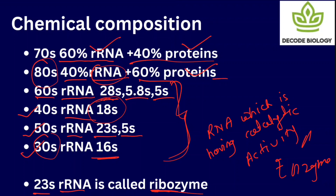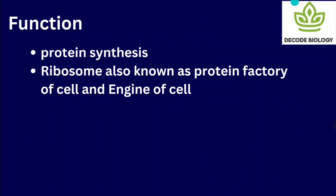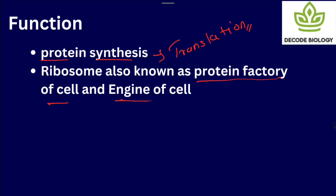During protein synthesis, the 23S RNA forms peptide bonds between two amino acids. Many amino acids join together in a chain, and that chain is called a protein. So the peptide bond between amino acids is formed by 23S RNA in prokaryotes, which is why it is called a ribozyme. The important function of ribozyme is protein synthesis — also called translation. Without ribozyme, translation cannot happen. That is why ribosome is called the 'protein factory of a cell' or 'engine of a cell,' because without protein, the cell's metabolism would stop.